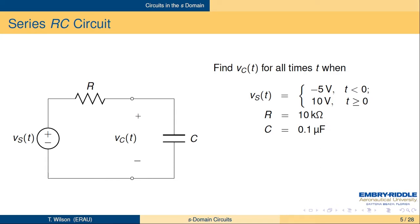Here is the series RC circuit with the voltage across the capacitor as the output, and a voltage source VS of T as the input. Let's find the capacitor voltage when VS is minus 5 volts for T less than zero, and then 10 volts for T greater than or equal to zero. The resistor is a 10k ohm resistor and the capacitor is 0.1 microfarads.